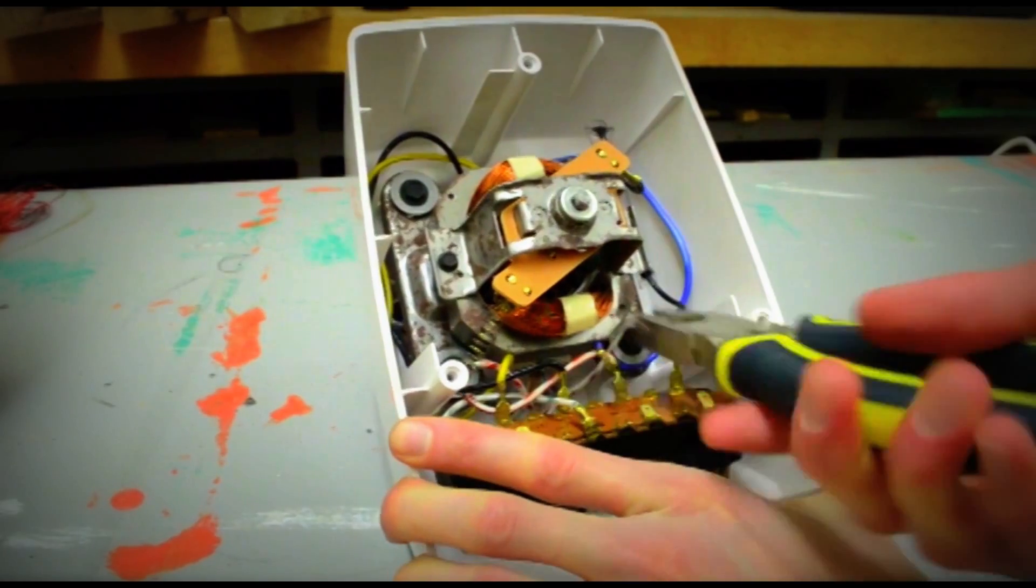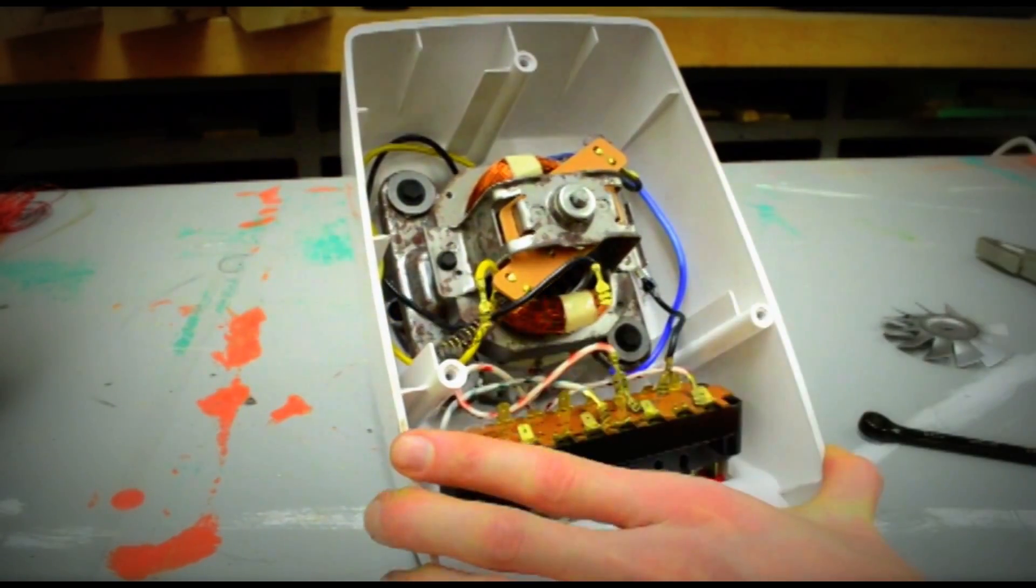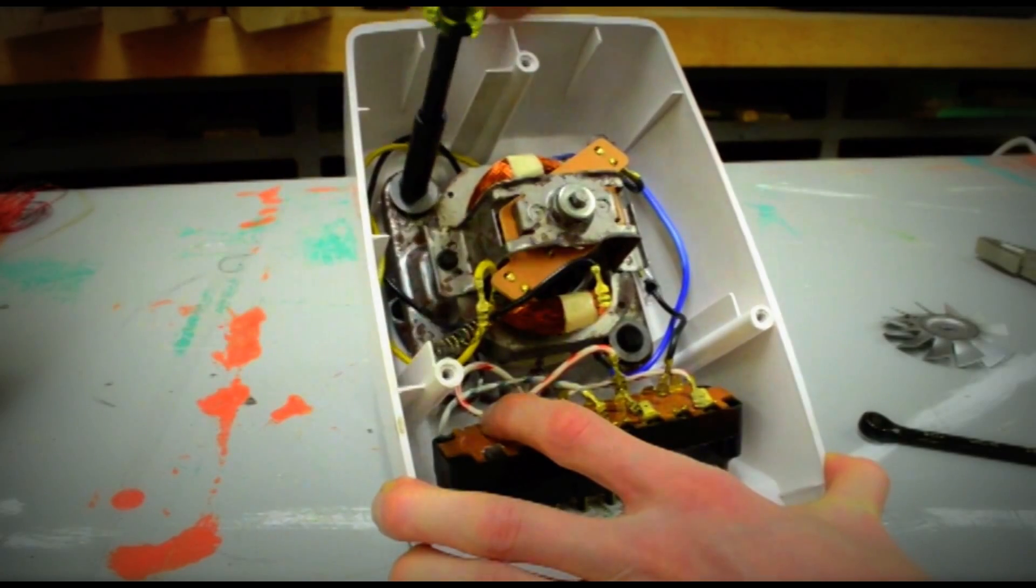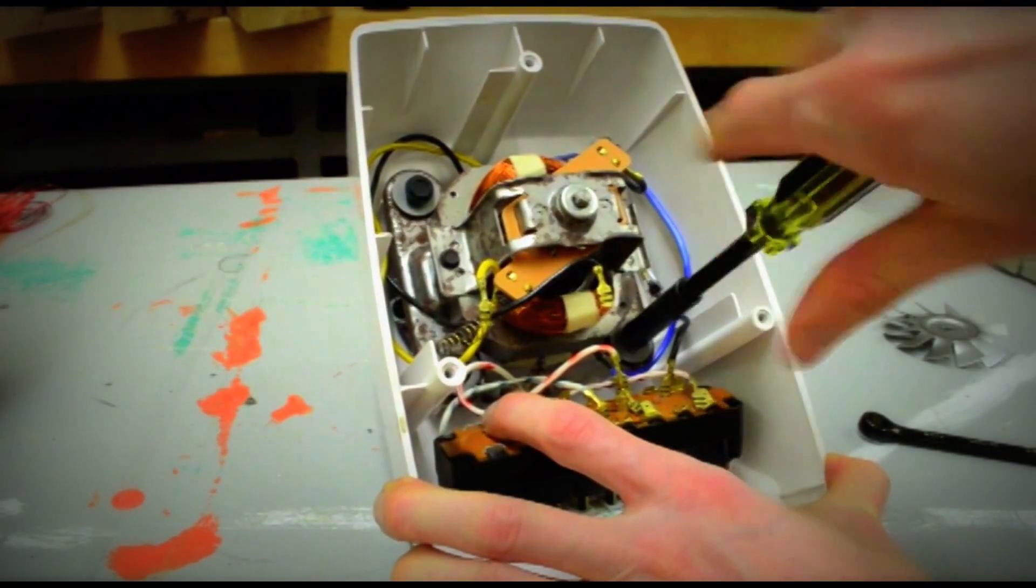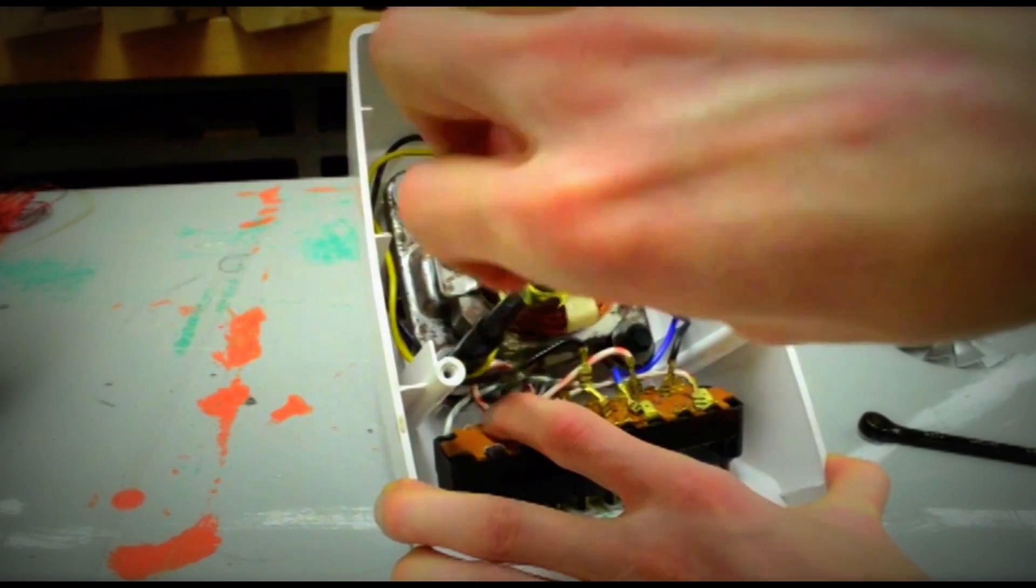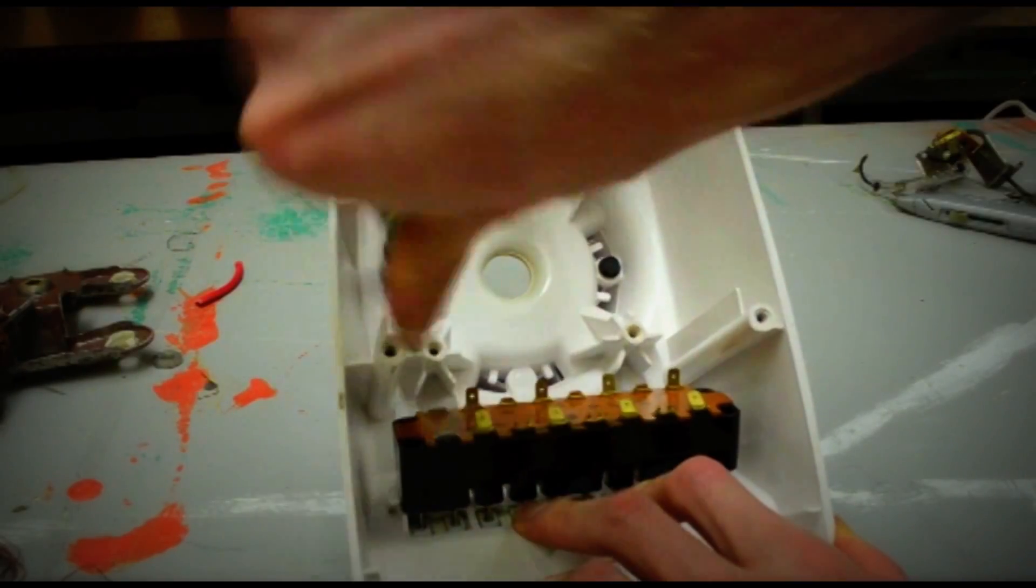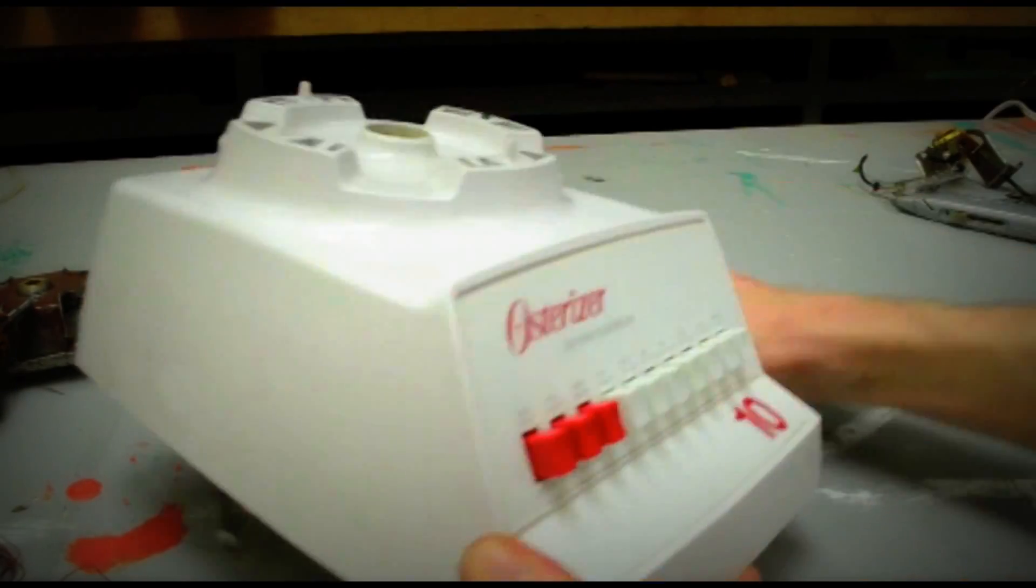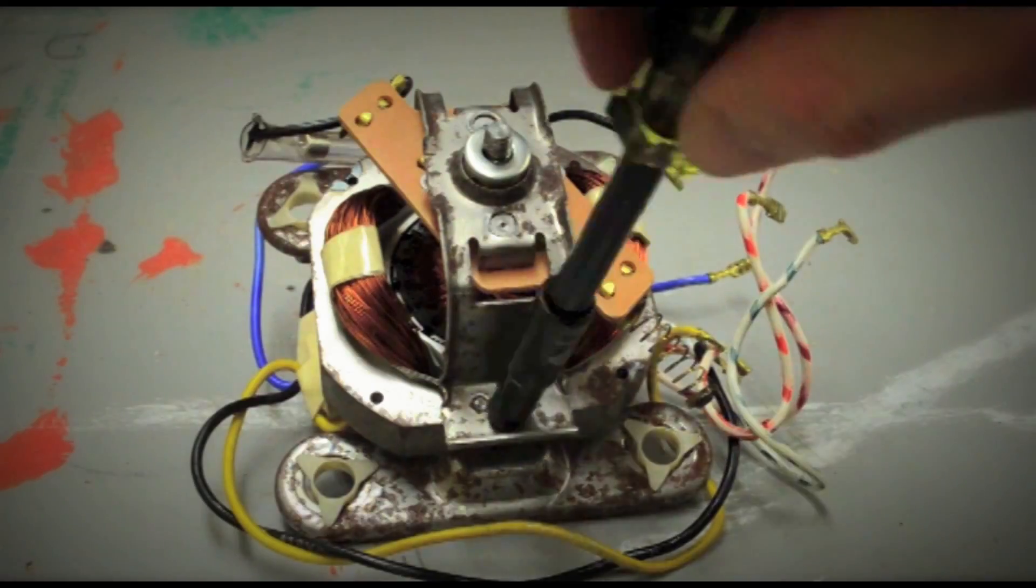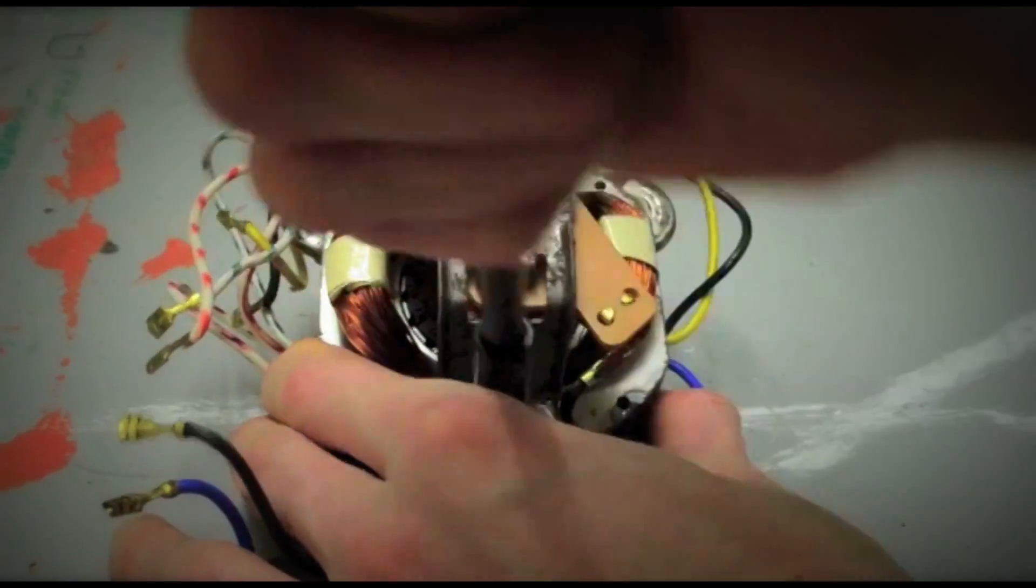Disconnect the colored wires. Undo the screws that hold the chassis in place and remove it. Remove the two screws that attach the plastic rim to the top of the blender base and set it aside. Undo the two screws that hold the chassis together and take it apart.